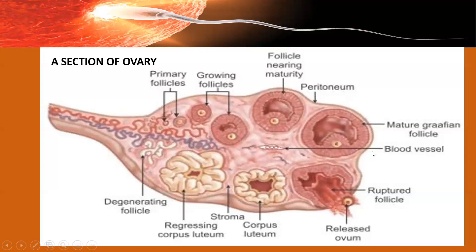This is the mature follicle. When the Graafian follicle bursts, it releases the ovum — more precisely, the secondary oocyte. The ruptured Graafian follicle is then known as the corpus luteum. If pregnancy occurs, the corpus luteum is maintained for some time. If there is no fertilization and no pregnancy, the corpus luteum breaks down and forms the corpus albicans.